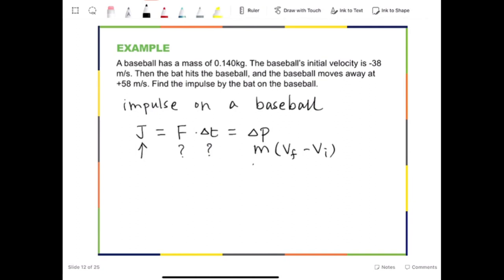We know mass, which is 0.140. We know final velocity 58. We know initial velocity negative 38. So we know that J is going to be just delta P. And delta P is going to be 0.140 times 58 minus negative 38, which is same as plus positive 38. So the answer is going to be 13 Ns.